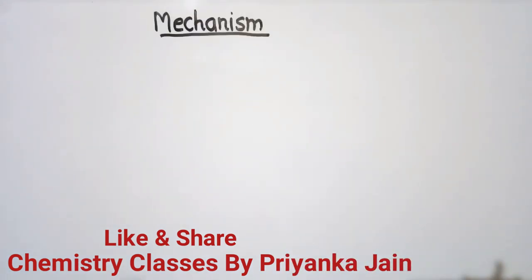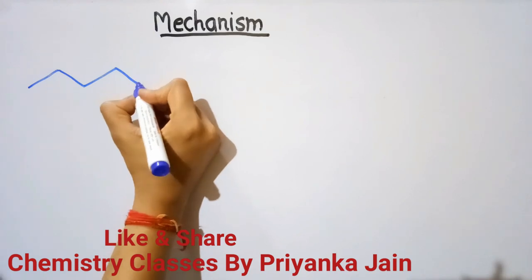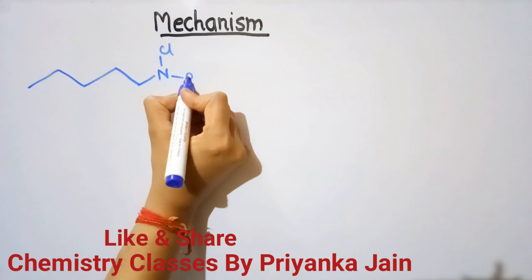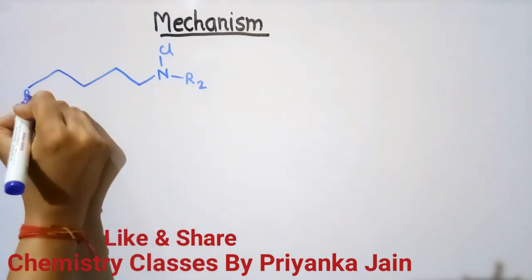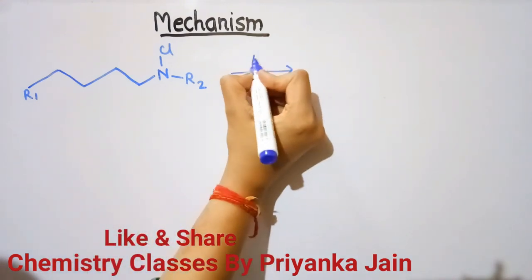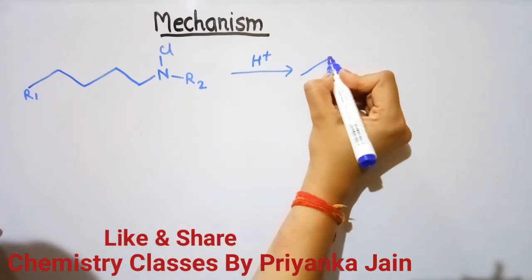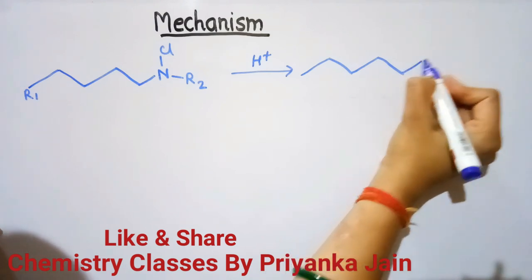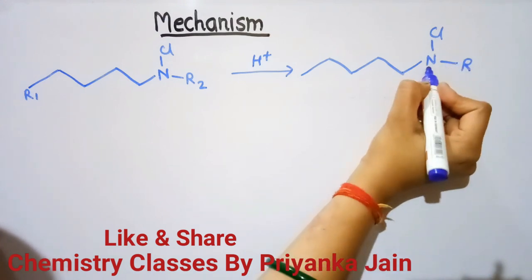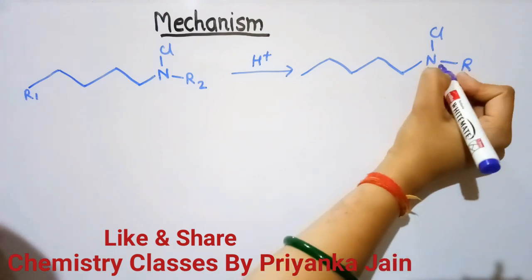Now we will see the mechanism of this reaction. The first step is the protonation of the compound. This is the N-haloamine, so it is first protonated. The proton gets attached at the nitrogen, so a positive charge appears here.